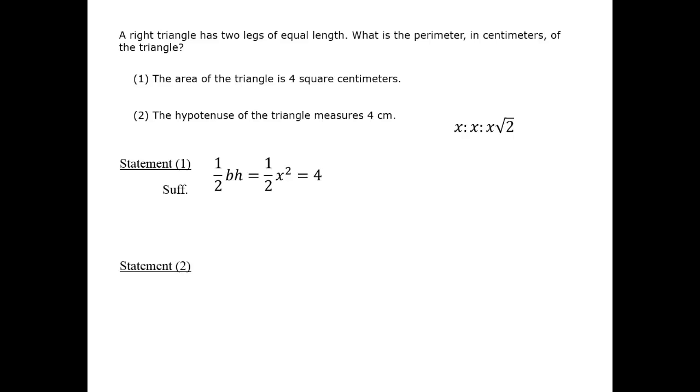Statement 2 tells us that x root 2 equals 4. So we can solve for x and determine the perimeter of the triangle. Statement 2, therefore, is sufficient.